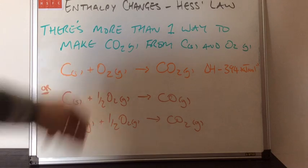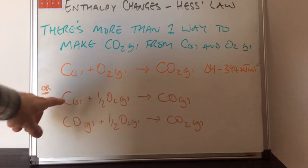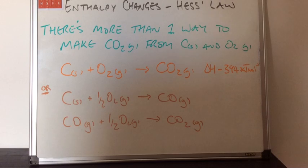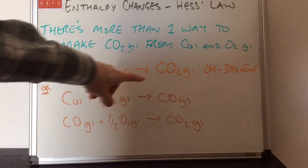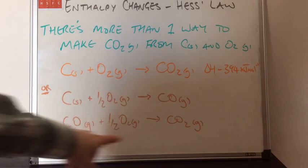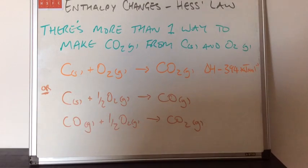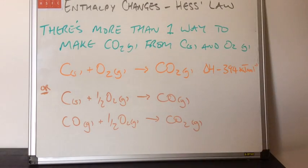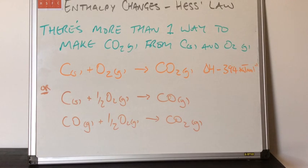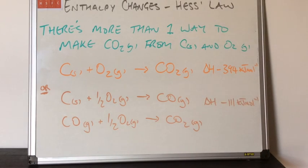You can see both methods start with the same substances — carbon with O2 in the orange route, and carbon with O2 in the brown route — and they both make carbon dioxide. I've deliberately not put the enthalpy changes up for the two brown steps, because I want you to think about how they compare with the orange route, and that's going to take us into Hess's law.